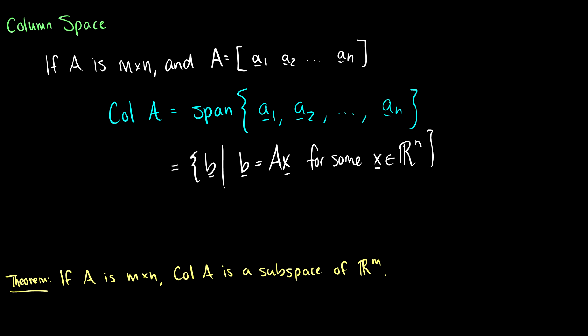And we know this is true because we've already done exercises in the subspace video that shows that the span of some vectors is a subspace. So the column space, which is A1 all the way up to An, is going to be a subspace of R^m.